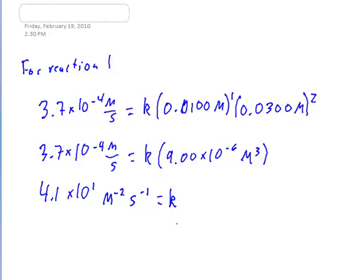So once again, what we've concluded from this reaction is: the reaction is first order with respect to A, second order with respect to B, and the overall order of the reaction is third order — because if we add the two orders together, that's what we get. This is also reflected in the units of our rate constant, which confirms a third order overall reaction. This covers the basic format for solving problems like this. You'll see problems like this both in lab and in lecture, and it's worth practicing.